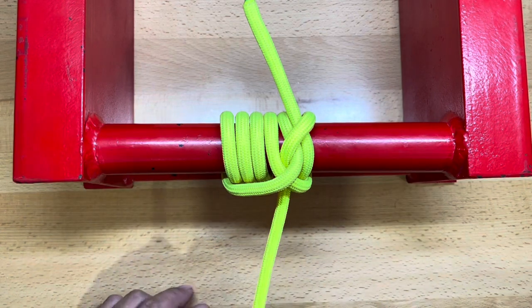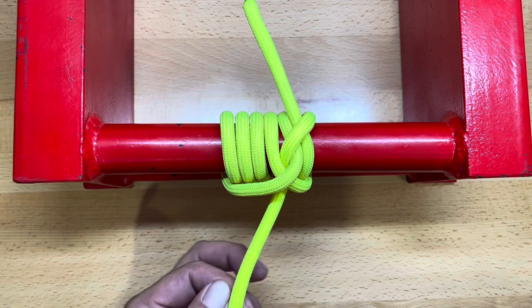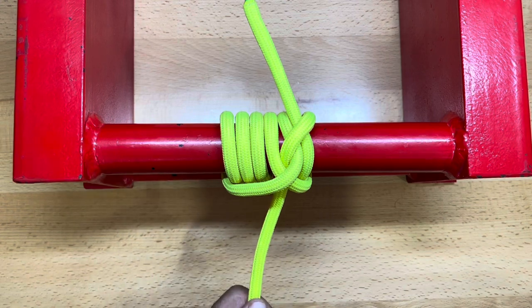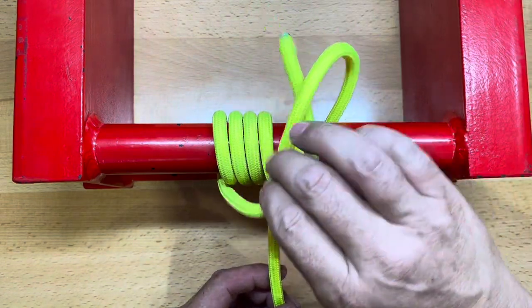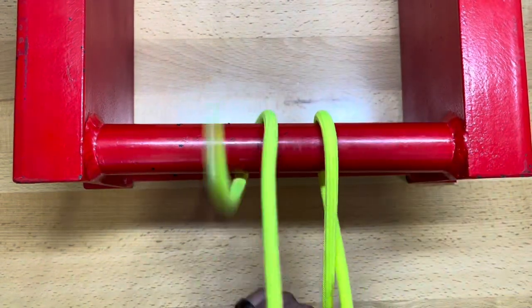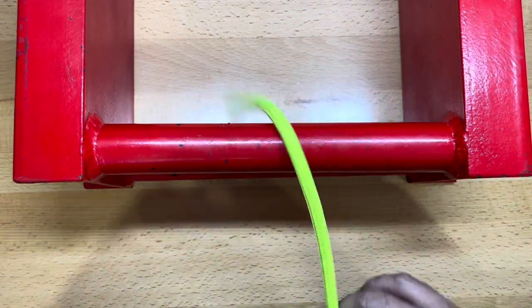And the last characteristic of this knot is that when it's unloaded after you don't have any load on the line, this is very easy to come apart. So you just lift up here, grab it, grab it, and it all comes apart very easily after it's unloaded.